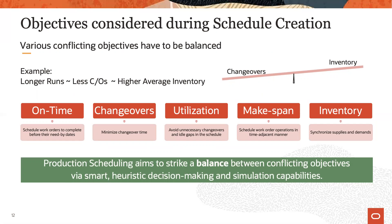Further, some of these objectives are in direct conflict with one another. Oracle production scheduling respects all active constraints and aims to balance conflicting objectives by applying a set of smart heuristic decision-making and simulation capabilities.